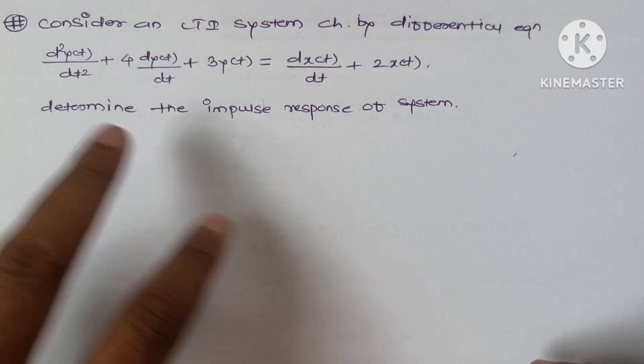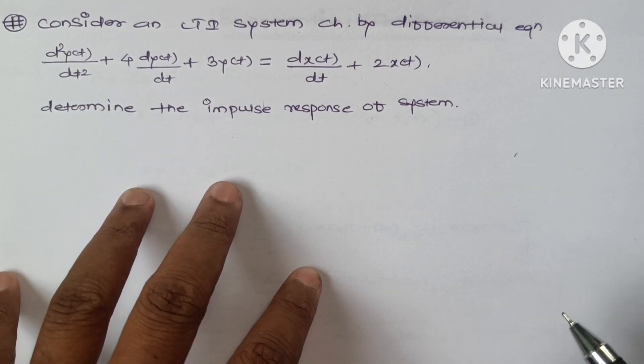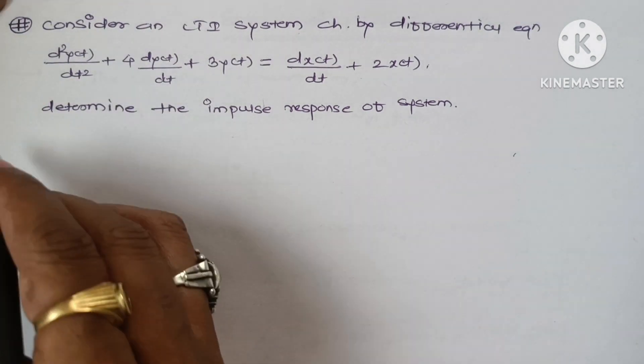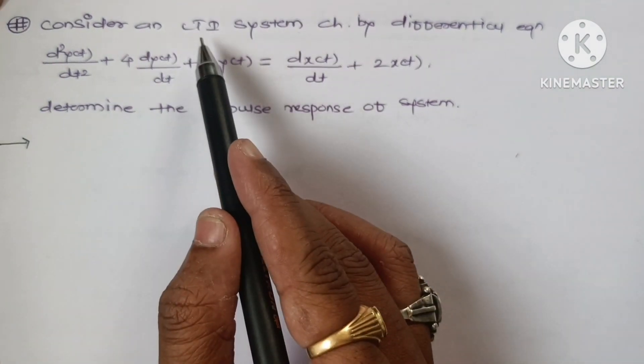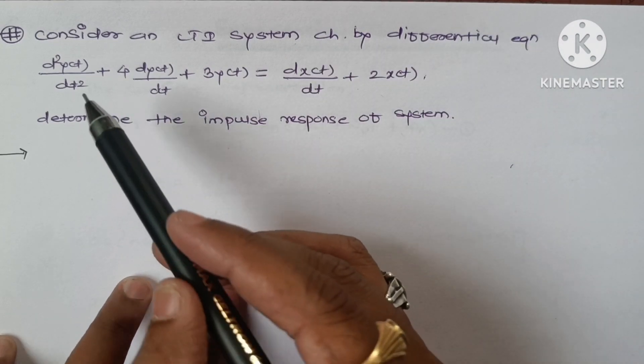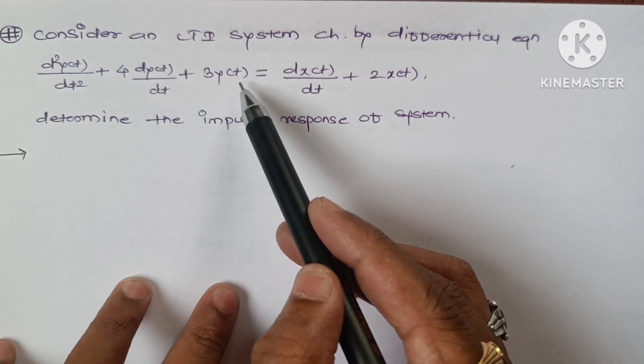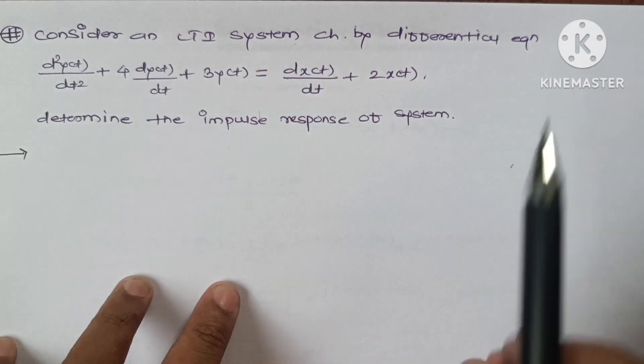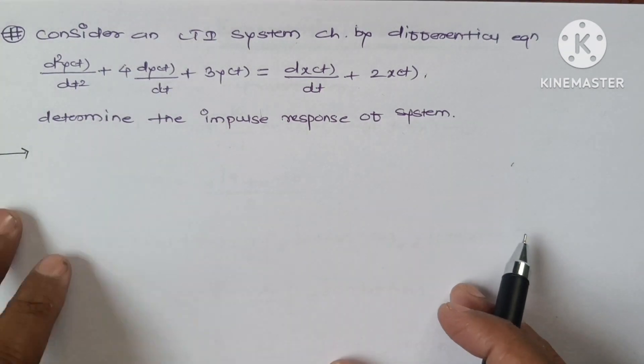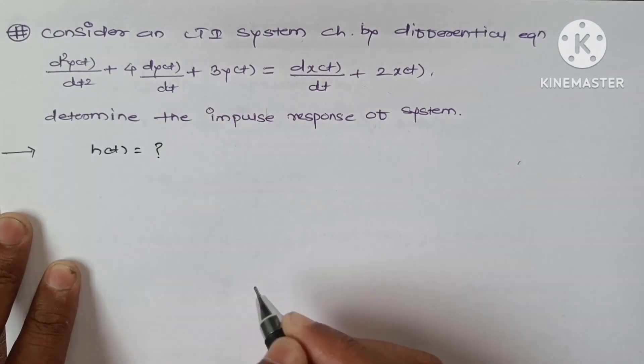So this type of question generally gives a differential equation and asks to find either the impulse response or the output response. If we see the statement, it is given as: consider an LTI system characterized by differential equation.